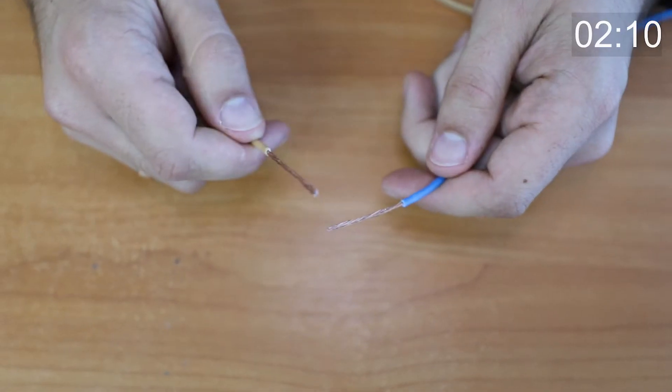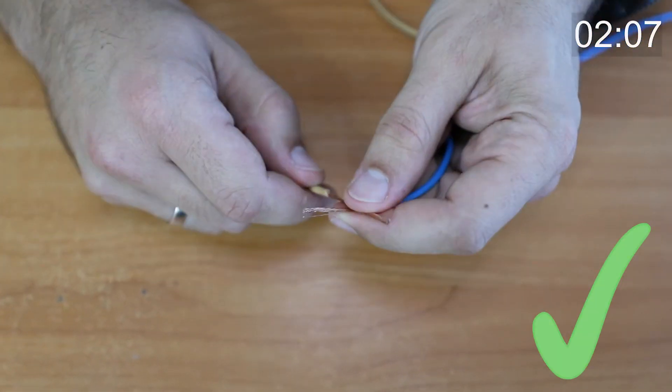If you want to make it nice, you should connect it not like this but this way and twist the tails.